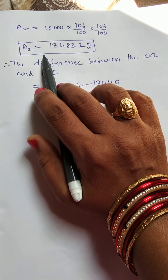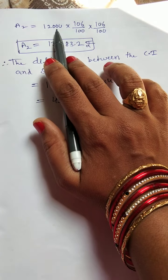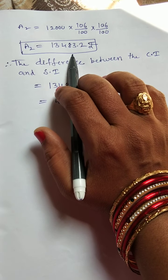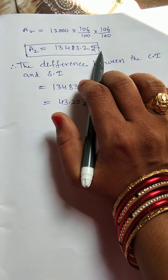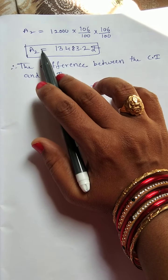Now, A2 equals, if you multiply all the numbers, you will get 13,483.2 rupees. Now, we got A2 amount also.